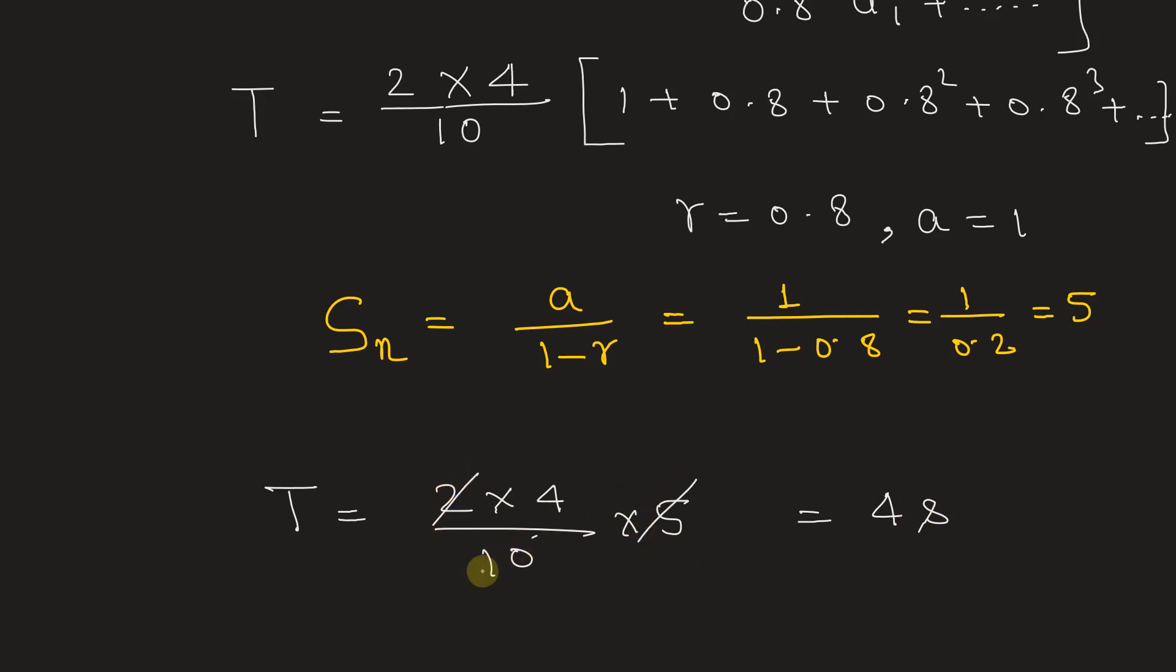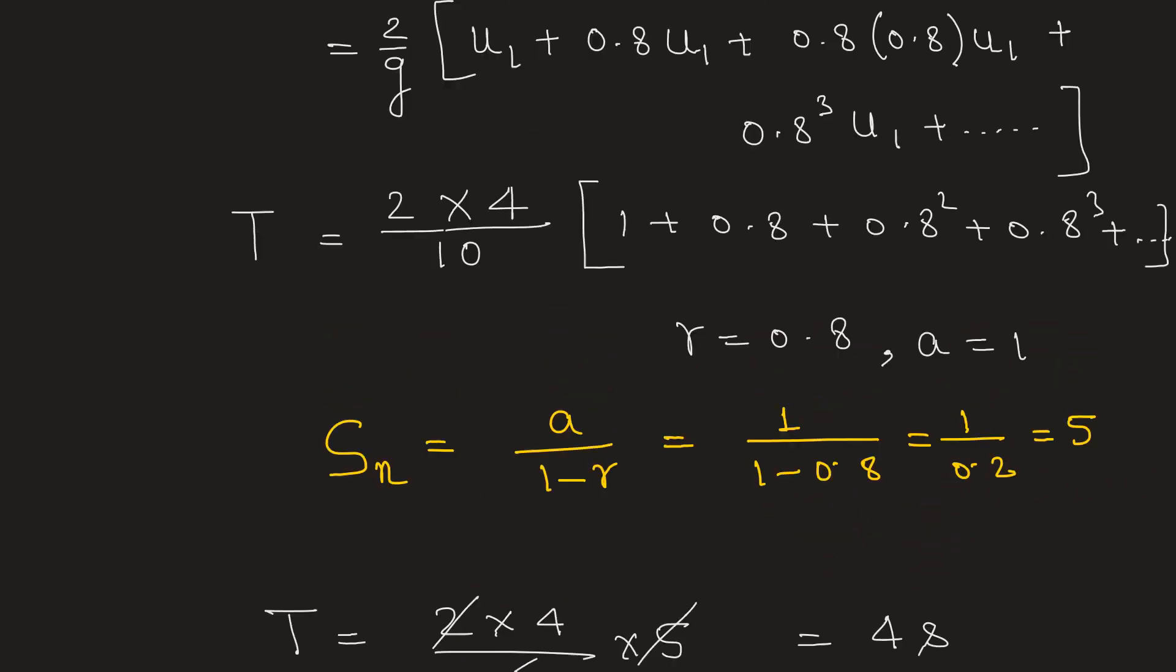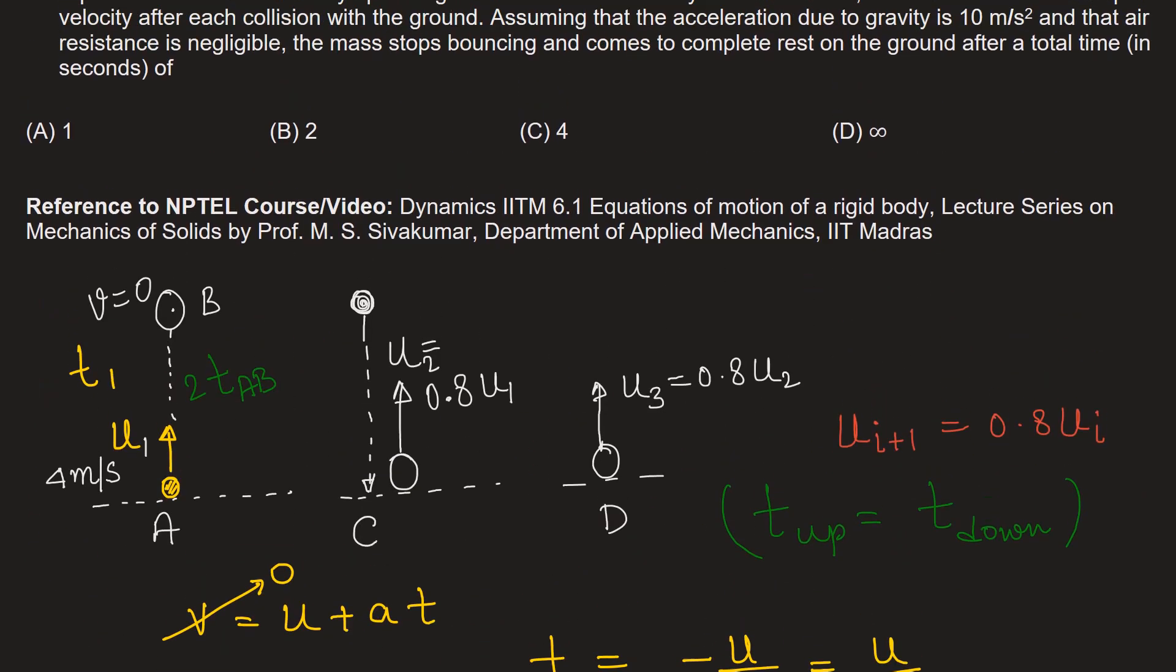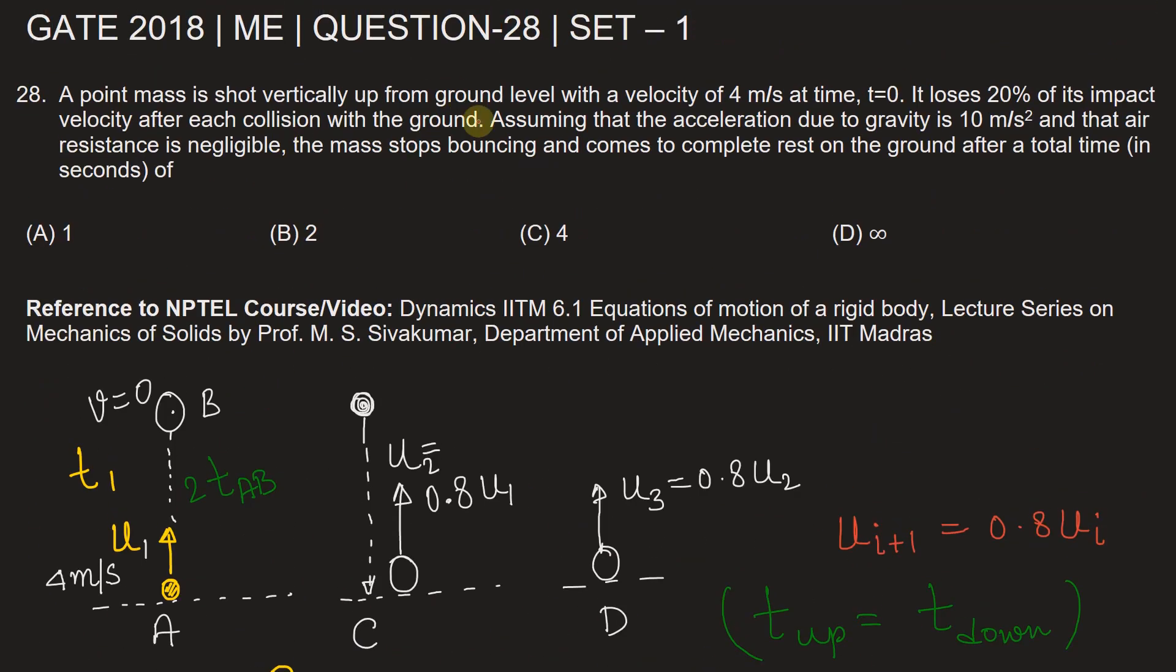Because 5 × 2 is 10. So this will be the total time taken by the point mass to come to rest after infinite number of collisions, theoretically infinite number of collisions. So option C is the correct choice.